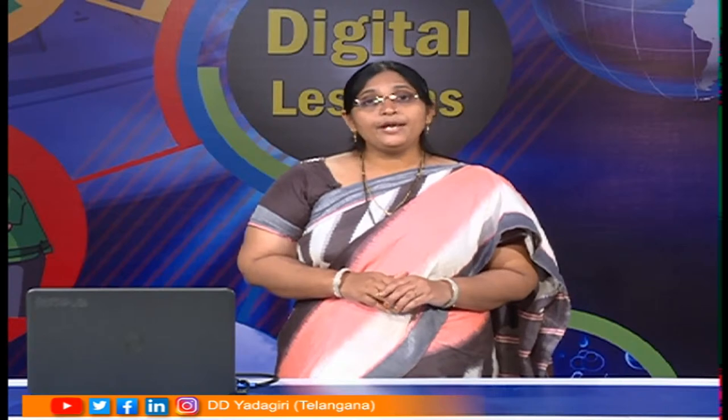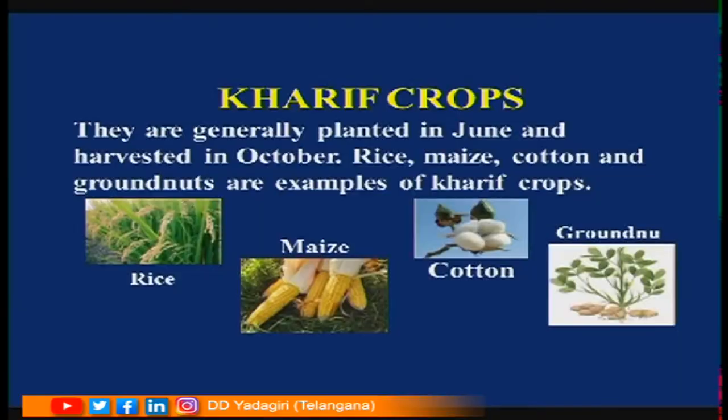Depending upon the seasons, we grow different types of crops. Crops that grow in the rainy season are called Kharif crops. They are planted in June and harvested in October. Examples are rice, maize, cotton, and groundnuts.